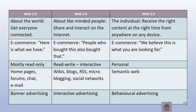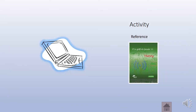Web 1.0 was mostly read-only. Web 2.0 was read-write and interactive. Web 3.0 is far more personal. Web 1.0 featured home pages, forums, chat, and email. Web 2.0 was about wikis, blogs, RSS, microblogging, and social networks. Web 3.0 is called the semantic web. In terms of advertising: Web 1.0 used banner advertising; Web 2.0 used interactive web advertising; and Web 3.0 uses behavioral advertising.